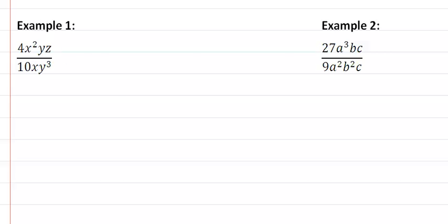So for example, in our first one here, the first thing I look at is my numbers. When I look at 4 and 10, I see that they have a common factor of 2. 4 divided by 2 is 2, 10 divided by 2 is 5.